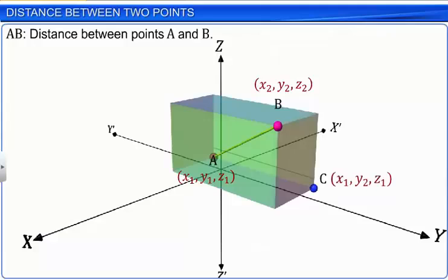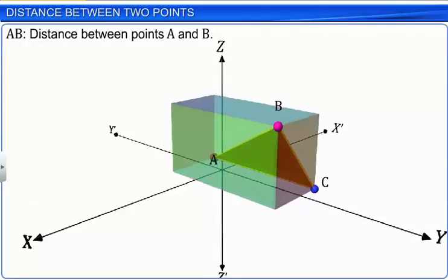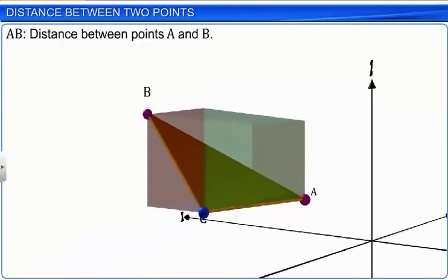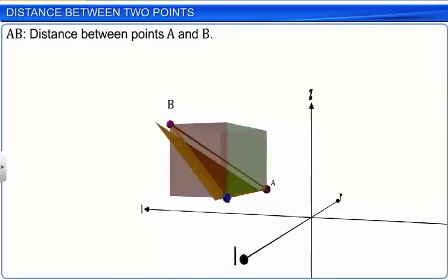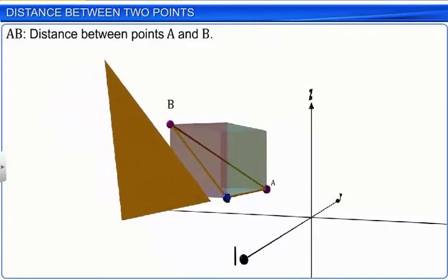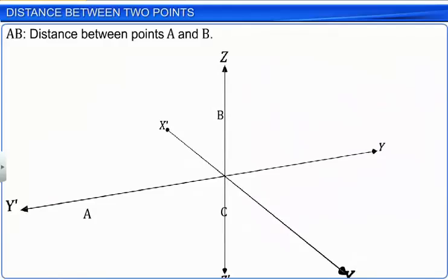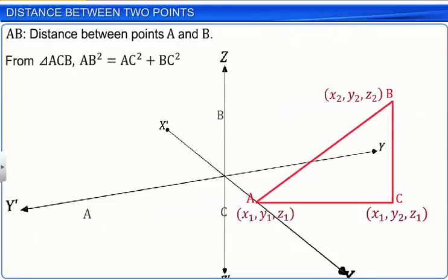The triangle formed by points A, B and C is a right-angled triangle with right angle at C. Since ACB is a right-angled triangle, we get AB² equals AC² plus BC².